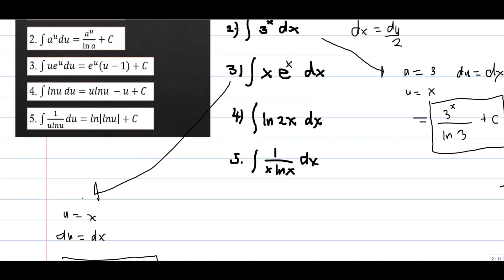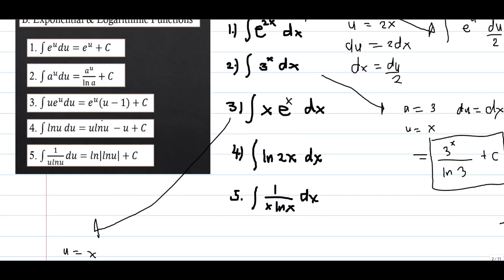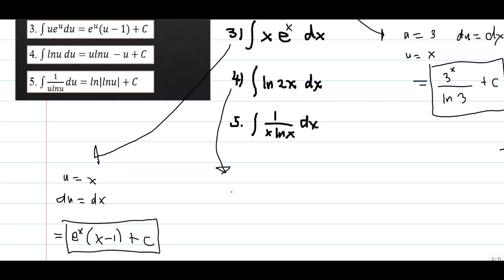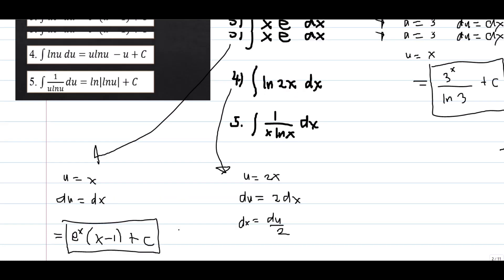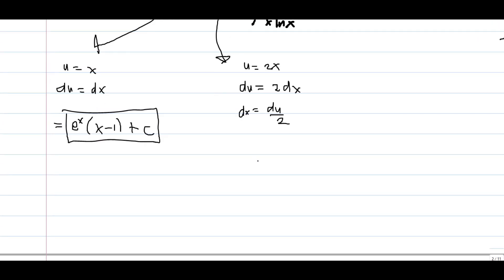Problem number four: what is the antiderivative of the integral of ln(2x) dx? Let u = 2x, then du = 2 dx, so dx = du/2. We apply theorem number four: the integral of ln(u) du equals u·ln(u) minus u.